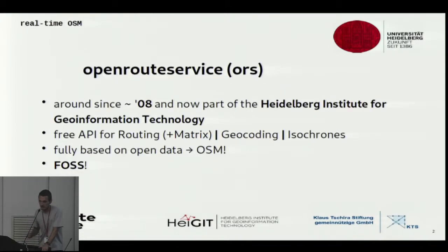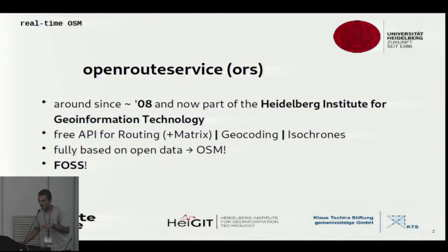The Open Route Service at the Heidelberg Institute for Geoinformation Technology has been around for about 10 years. It's fully based on OpenStreetMap, free and open source software, and offers a free API for routing, isochrones, and geocoding.